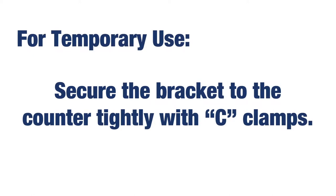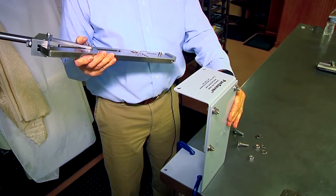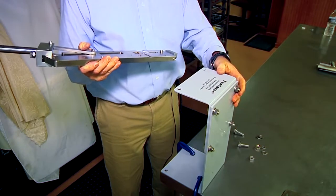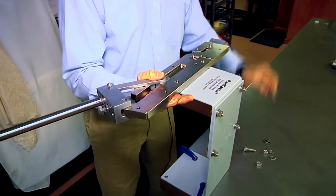For temporary use, secure the bracket through the counter tightly with C-clamps. With the two brackets assembled and mounted to the table, then attach the horizontal base to the top of the bracket.